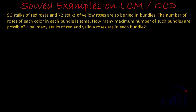Since we want to divide these red roses in equal numbers among the bundles, that means the number of bundles has to be a factor of 96.